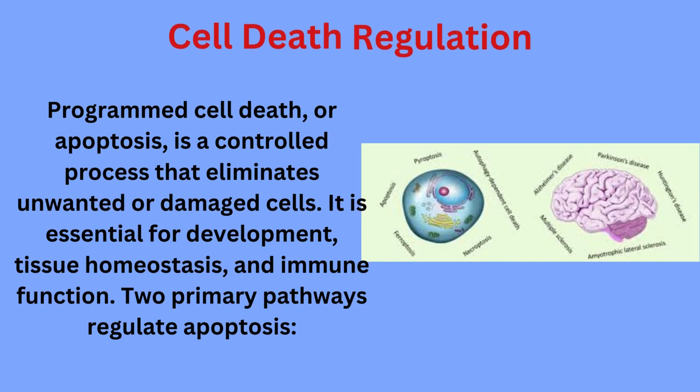Cell Death Regulation. Programmed cell death, or apoptosis, is a controlled process that eliminates unwanted or damaged cells. It is essential for development, tissue homeostasis, and immune function.